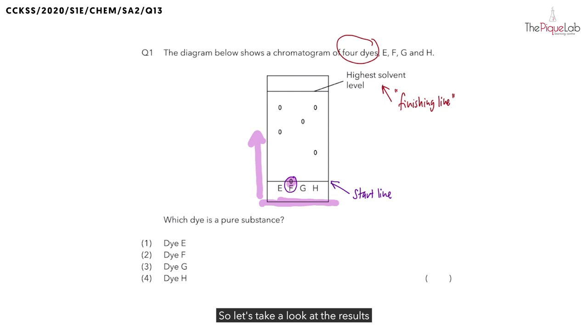So let's take a look at the results for sample E. How many spots do you see for E? There are two spots for sample E. So this means that E is made up of two components which are separated to form two visible dots here.